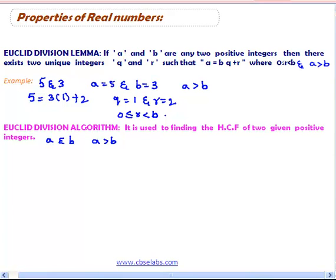By applying Euclid division lemma to these positive integers a and b we get a is equal to bq plus r where 0 less than r less than b.